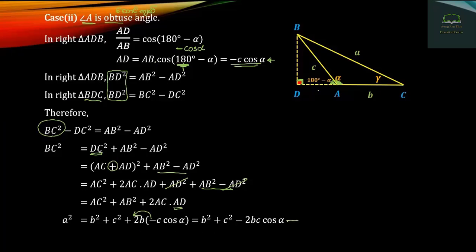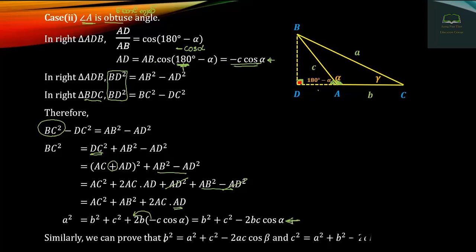This yields c·cosF, giving us the law: c² = a² + b² − 2·a·cosF, and c² plus a² minus 2·a·cos — completing the law of cosines. On the other hand,